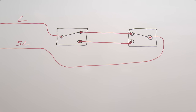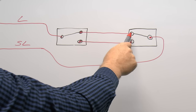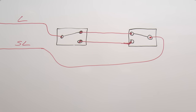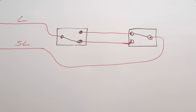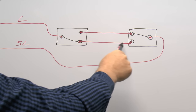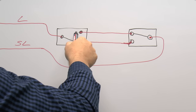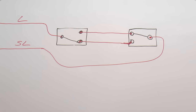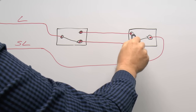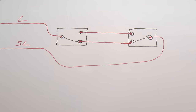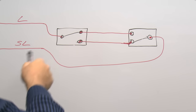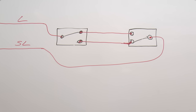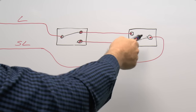With the switches in this position the light is on — power comes in through the first switch contact, along the top wire, through the second switch contact, and back along the switched line to the light. If you move one switch it breaks that connection and the light turns off. Moving the other switch then restores the connection and the light comes on again. Either switch can independently turn the light on or off — the arrangement doesn't depend on one switch being in a particular position for the other to work.